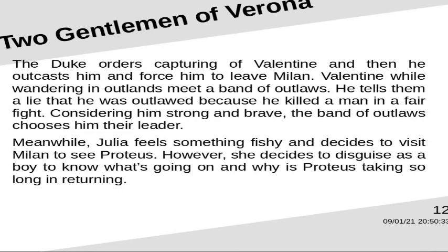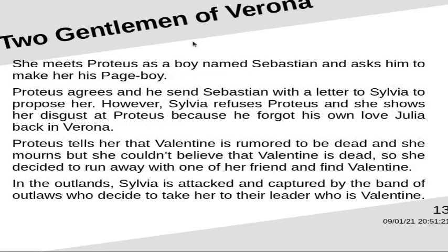Meanwhile, Julia feels something is wrong and decides to visit Milan to see Proteus. She decides to disguise as a boy to find out what is going on. She meets Proteus as a boy named Sebastian and asks him to make her his page boy. Proteus agrees and sends Sebastian with a letter to Sylvia to propose her. However, Sylvia refuses Proteus and shows her disgust, as he forgot his own love Julia back in Verona. Proteus tells her that Valentin is rumored to be dead, but she couldn't believe it.